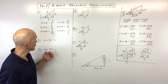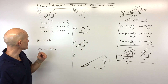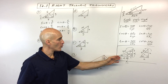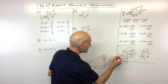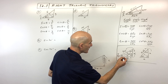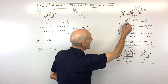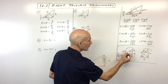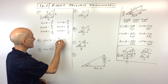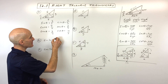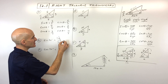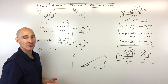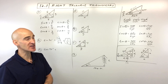Let's look at some examples. If we want to find the sine of 30 degrees, we position ourselves at the 30-degree angle. Sine is the opposite divided by the hypotenuse, so that would be X over 2X. The X's cancel, and we get one-half. So the value of sine of 30 degrees is one-half.